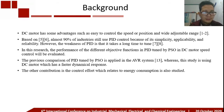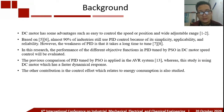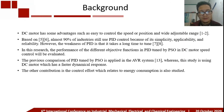Background. DC motor has some advantages such as easy to control the speed or position and a wide adjustable range. Based on references 5 and 6 in our paper, almost 90% of industry still uses PID control because of its simplicity, applicability, and reliability. However, PID has a weakness: it takes a long time to tune. In this research, the performance of different objective functions in PID tuned by PSO — particle swarm optimization — in DC motor speed control will be evaluated.